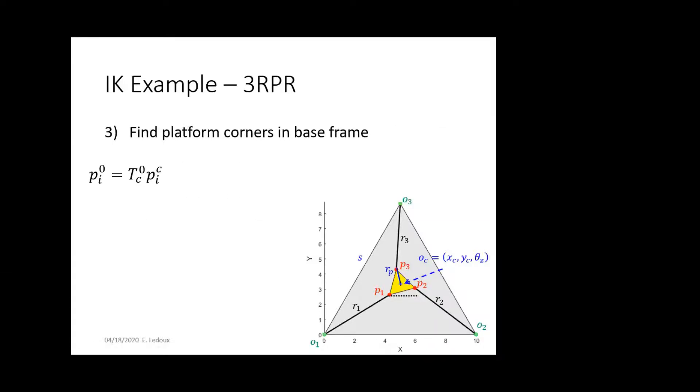And the platform corners in the base frame, we just multiply. So, we do this multiplication to get P1 in the zero frame. And then, similarly, it's the same transformation, but it's going to be a different point each time to get each of those points in the world frame. So, we go P1 to O1, P2 to O2, and P3 to O3.